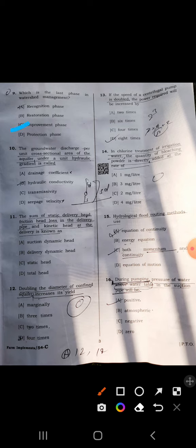Tenth: groundwater discharge per unit cross-section area of the aquifer under a unit hydraulic gradient is called hydraulic conductivity.